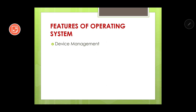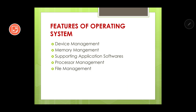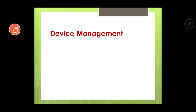Now let us see some of the striking features of an operating system. The features are: device management, memory management, supporting application softwares, processor management, file management, and security. Let us discuss each feature of the operating system briefly. The first feature is device management.